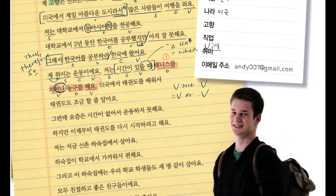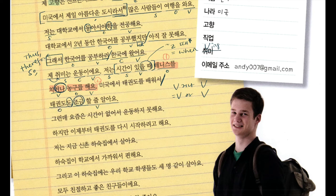미국에서 태권도를 배워서 태권도도 조금 할 줄 알아요. I'm going to cut it into two. The main clause is 태권도도 조금 할 줄 알아요 — let's treat it as a whole verb: I know how to do a little. What? 태권도. And 태권도도 means 'as well' — I know how to do taekwondo as well. Why? Because I learned taekwondo in America — that's the reason clause.